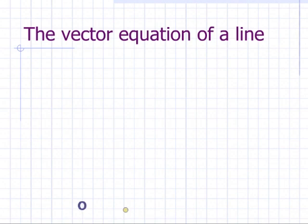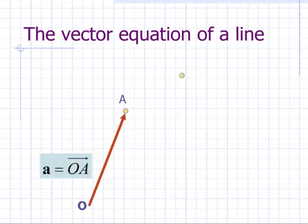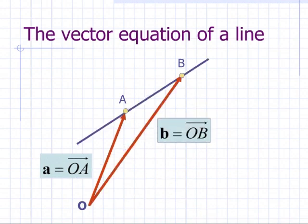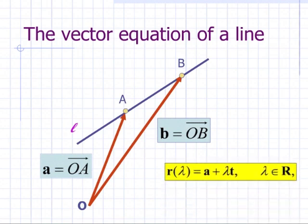Suppose we have a line through point A with position vector A and point B with position vector B, which we call L. Then the vector equation of that line is R, which depends on a parameter lambda, is equal to A plus lambda T, where lambda is any real number and T is B minus A. As lambda changes we move along the line L.